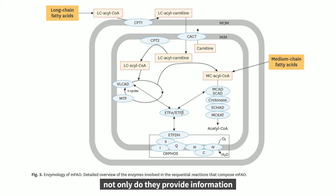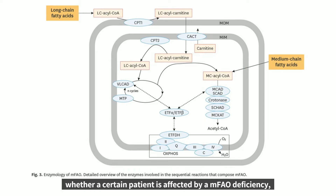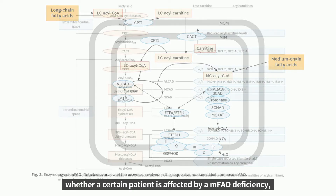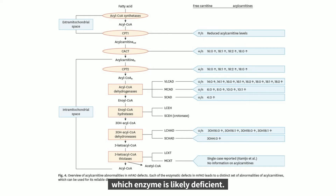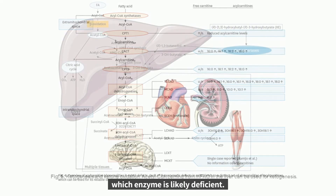Not only do they provide information whether a certain patient is affected by a mitochondrial fatty acid beta-oxidation deficiency, but the acylcarnitine profile itself usually immediately points to which enzyme is likely deficient.